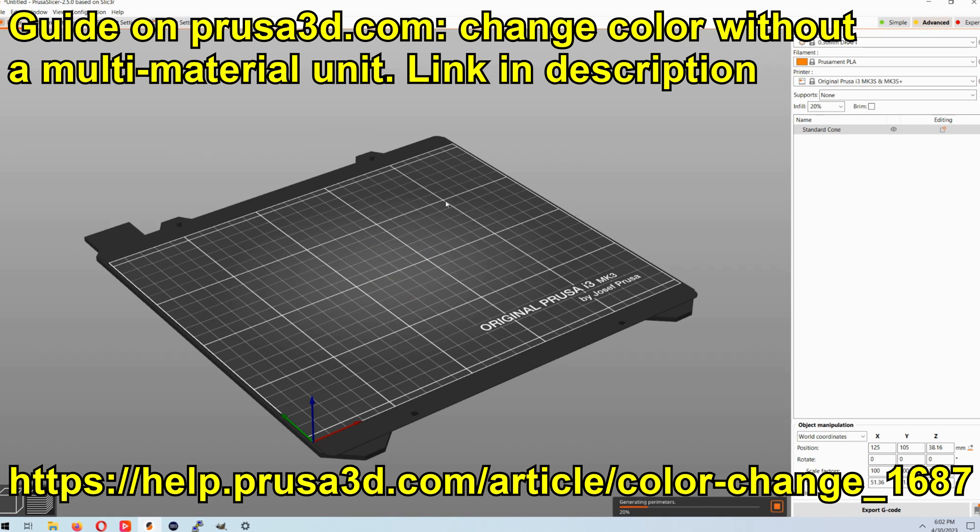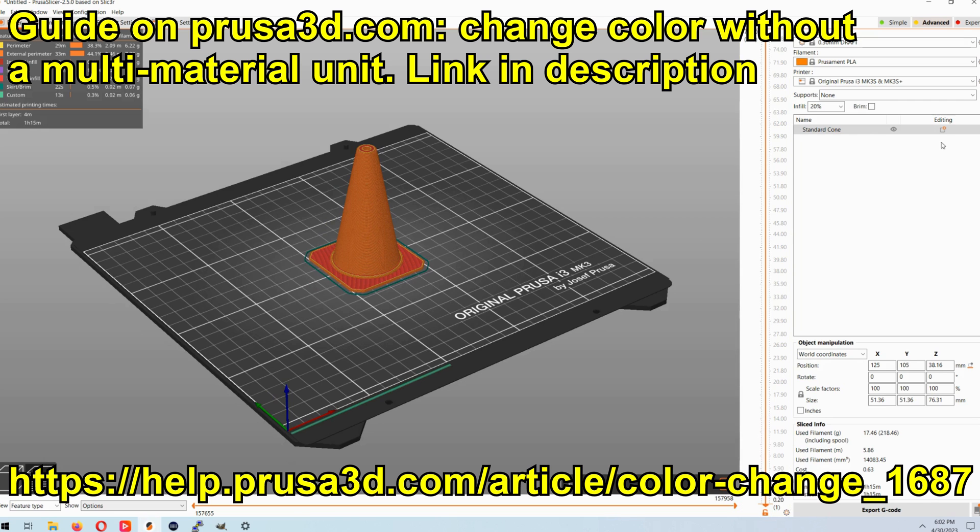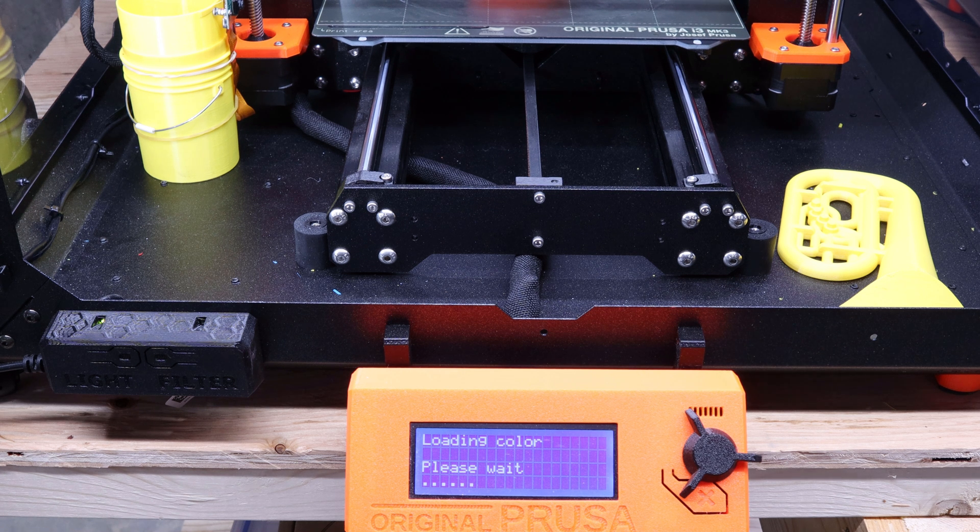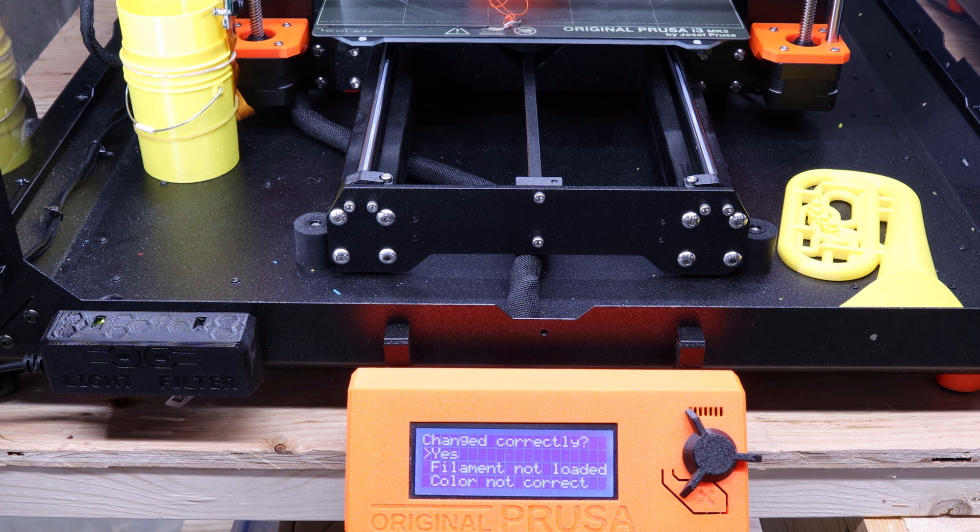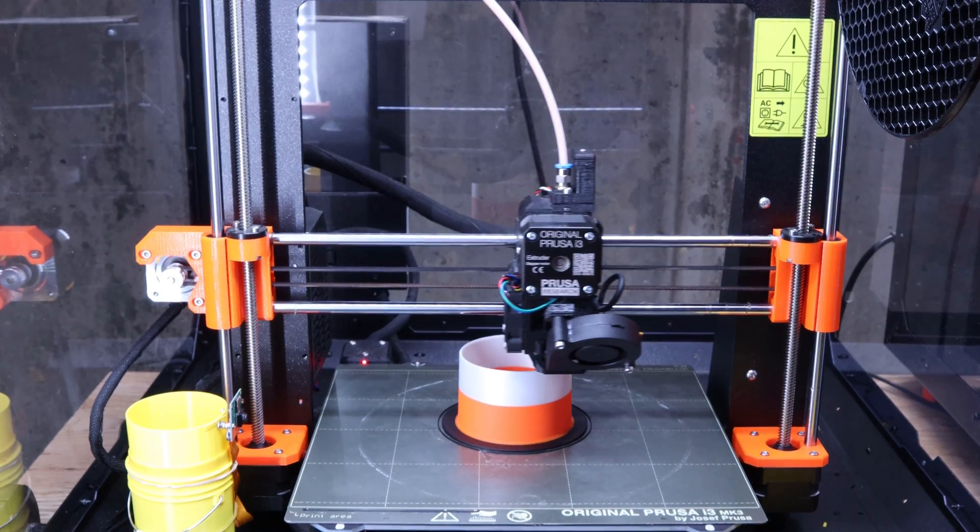I'll use PrusaSlicer to instruct my 3D printer to change color based on the layer number. This is really seamless and straightforward and while printing the printer will prompt you to change filament to unload the current color and load in the next color.